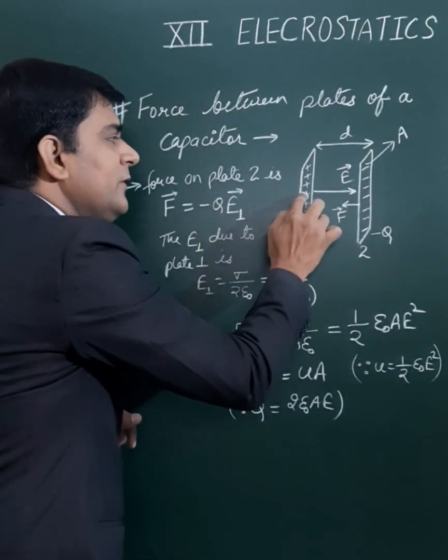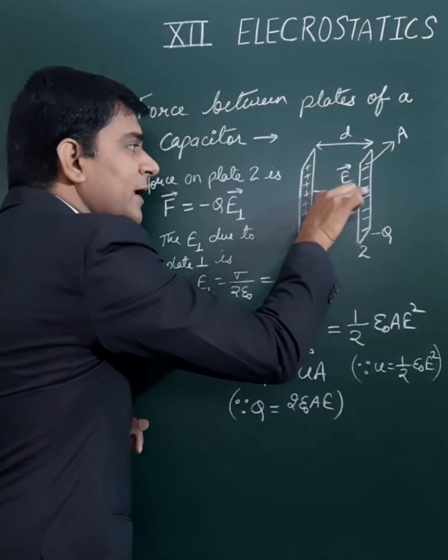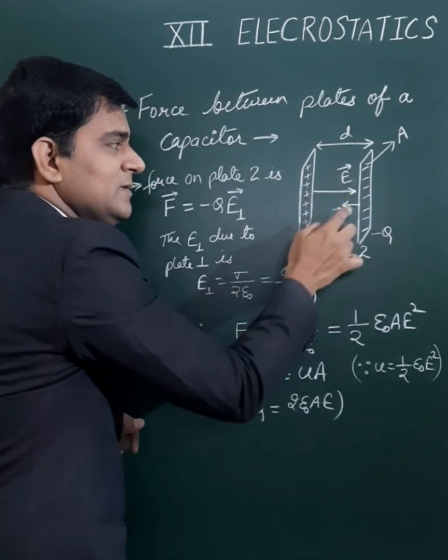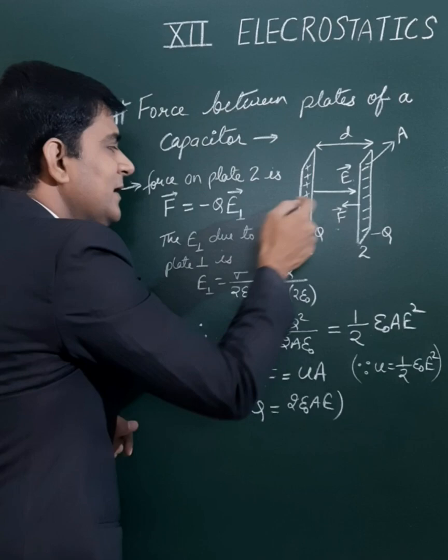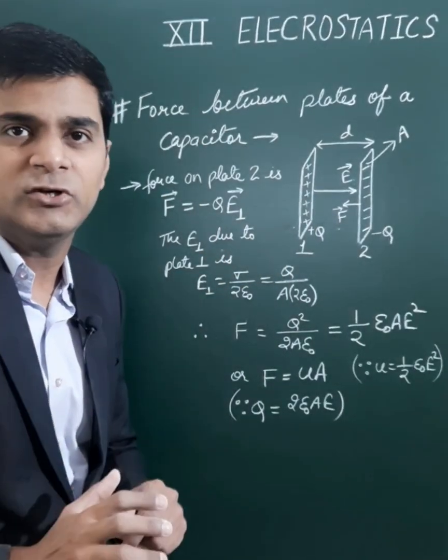This E1 is the electric field due to the first plate. The direction of E1 will be to the right hand side, and the force will be to the left hand side. So the negative sign appears in this vector equation.